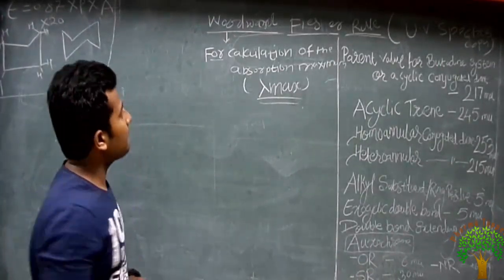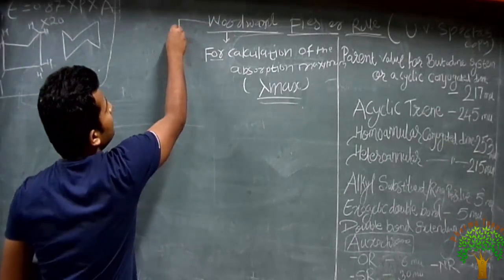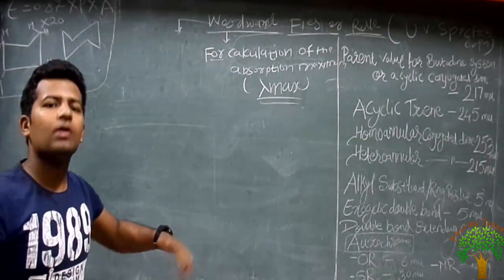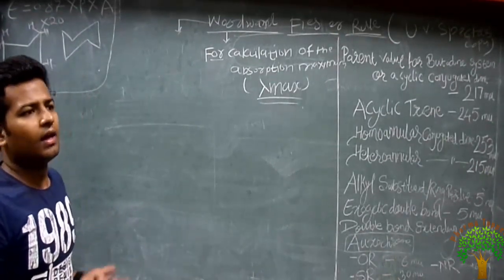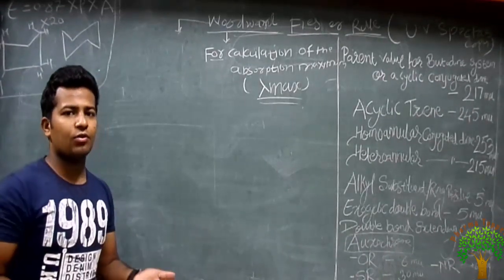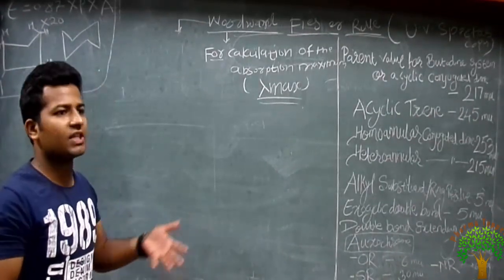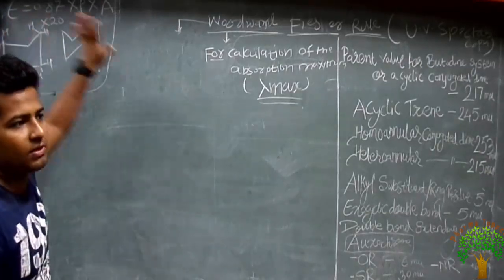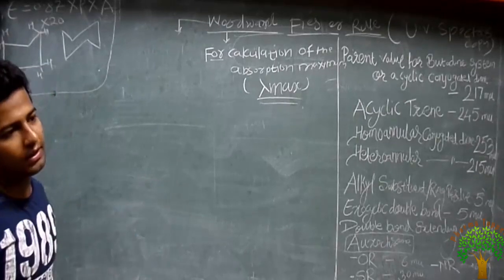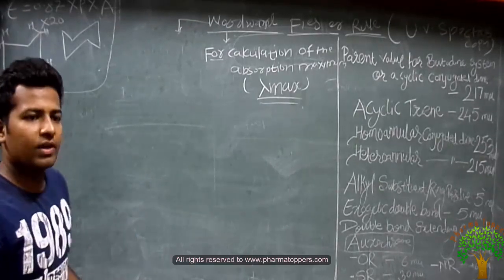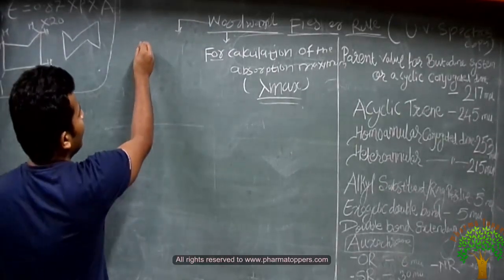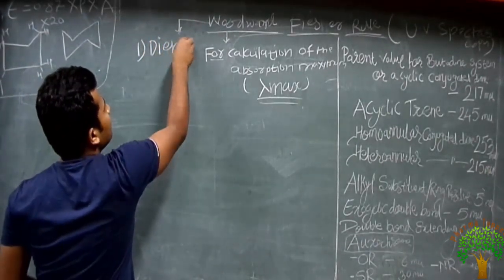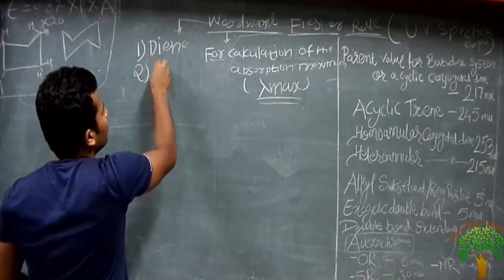The Woodward-Fisher rule is used in UV spectroscopy to determine the conjugation present in structures and various conjugated systems. Various functional groups like carbonyl, which have specific lambda max and specific absorptivity — that is epsilon value — have been calculated using the Woodward-Fisher rule. The rule is mainly used for calculation of lambda max in the case of dienes and in the case of enone systems.